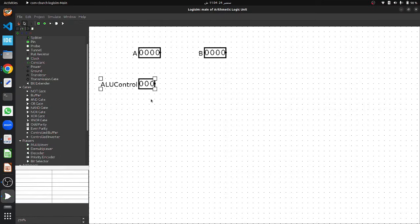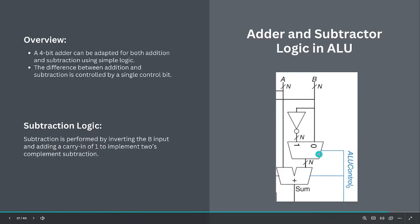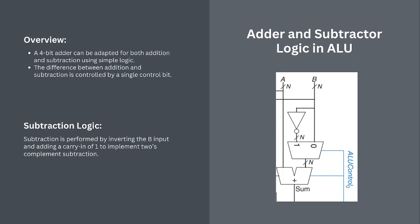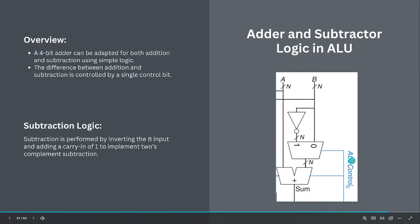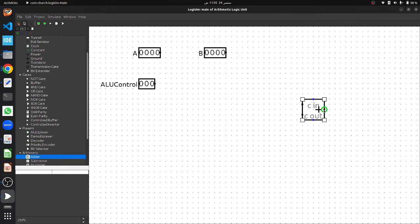For addition and subtraction, we can use a 4-bit adder or subtractor. For this design we will use a 4-bit adder. To handle subtraction, we will use a control bit that inverts the B input and adds a carry-in of 1, turning our addition circuit into a subtraction circuit when needed. We will implement this with a multiplexer that controls whether we add or subtract based on the control signal.